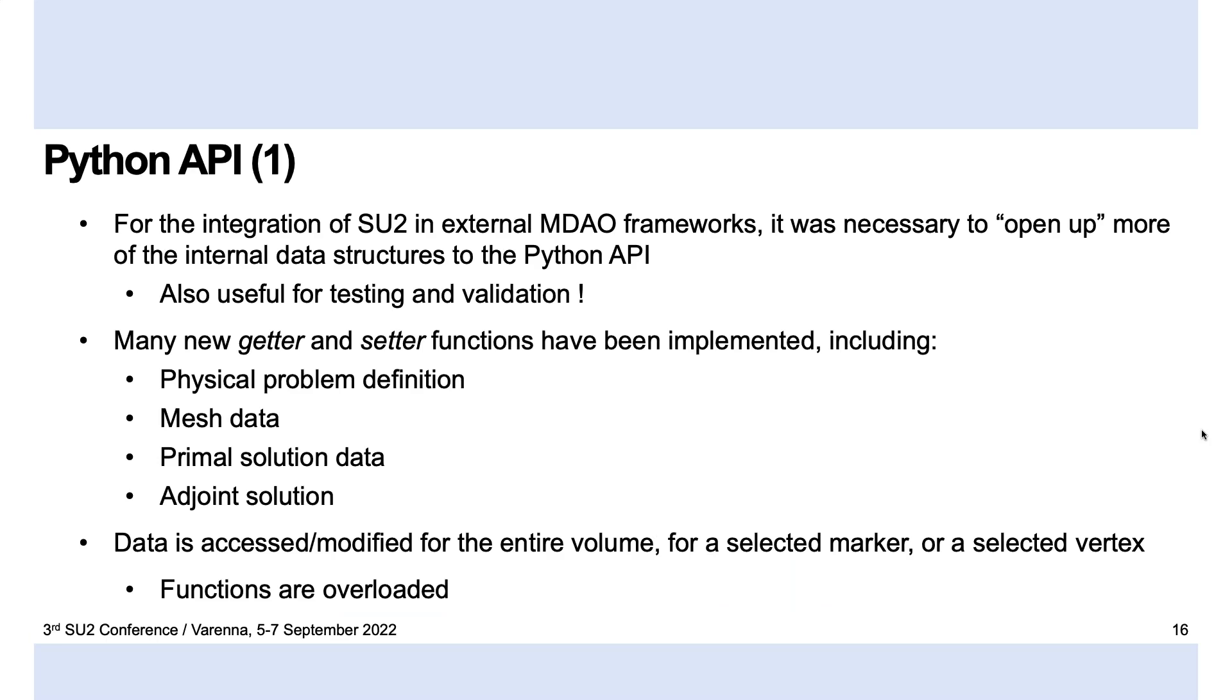And finally, in order to use this in an external framework, we needed to be able to access and modify the outputs and inputs of interest. So we did a bit of an overhaul of the Python interface, where we tried to standardize the naming of some of the methods and heavily extended which quantities were available in terms of the definition of the grid, the physical boundary conditions, the solution of the primal equations, and the adjoint.